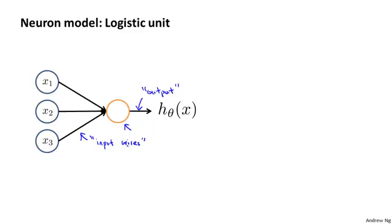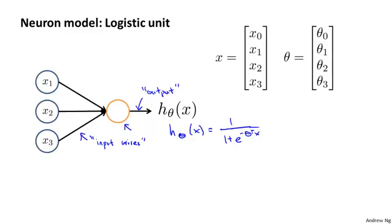And whenever I draw a diagram like this, what this means is that this represents a computation of h of x equals one over one plus e to the negative theta transpose x. Where, as usual, x and theta are our parameter vectors. So this is a very simple, maybe vastly oversimplified model of the computation that the neuron does, where it gets a number of inputs, x1, x2, x3, and it outputs some value computed like so.